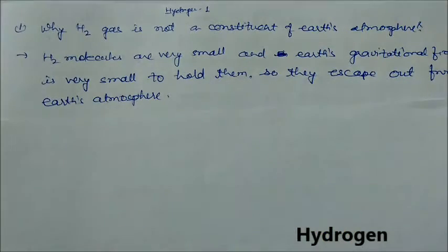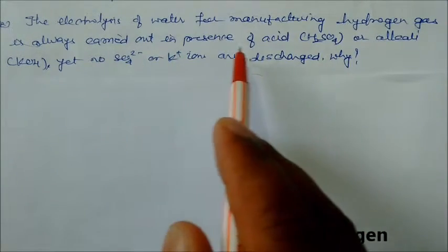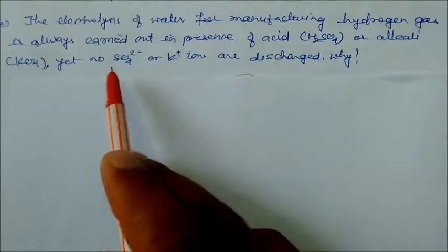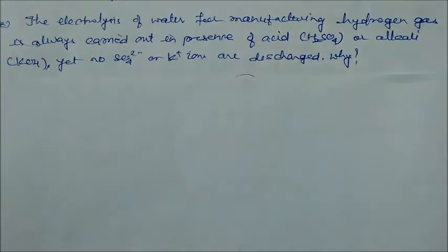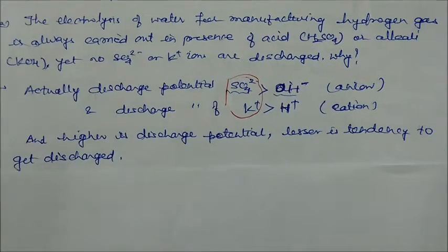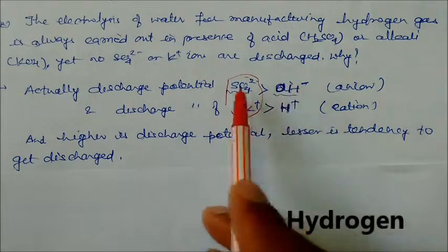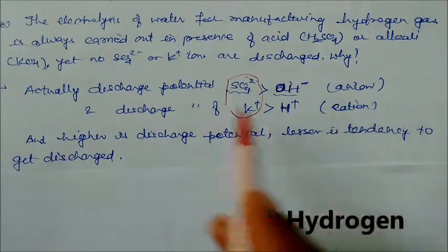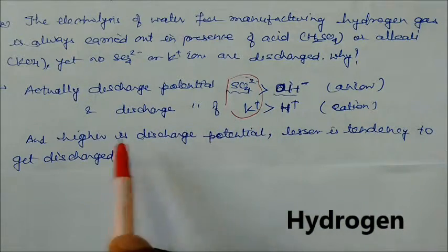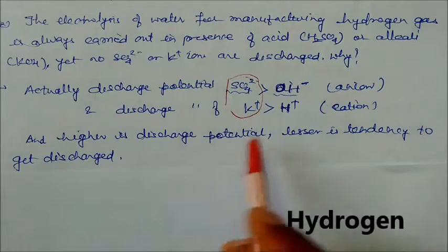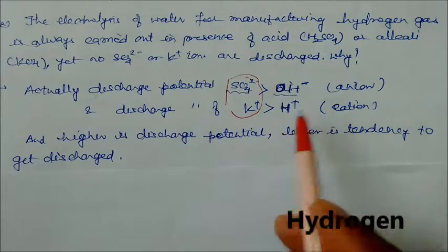The electrolysis of water for manufacturing hydrogen gas is always carried out in presence of acid like H2SO4 or alkali, yet no sulfate ions or potassium ions are discharged. Why? This is based on the concept of discharge potential. The discharge potential of SO4²⁻ is greater than OH⁻, and for cations the discharge potential of K⁺ is greater than H⁺. If the discharge potential is higher, the lesser is tendency to get discharged, so these ions are never discharged. Only OH⁻ converts to oxygen and H⁺ converts to hydrogen.